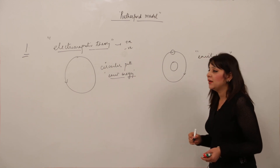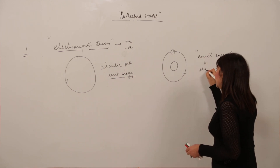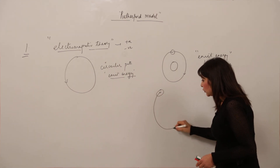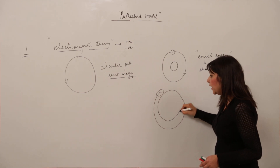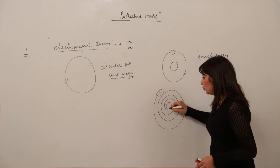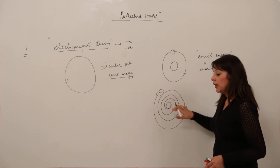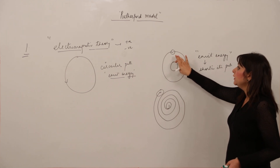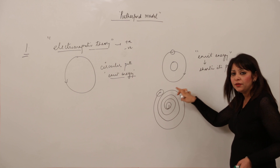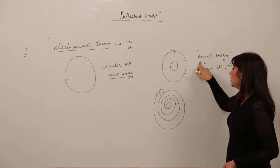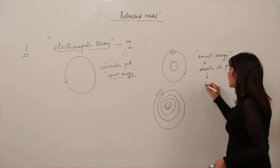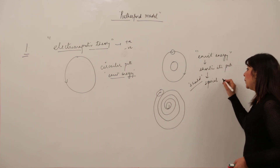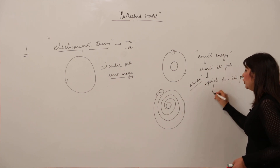If the electron emits energy, it should shorten its path. The negatively charged particle is moving and losing energy, so its path should become shorter and spiral, causing it to spiral down into the nucleus as it continuously emits energy. According to this theory, applying it here, any charged particle revolving in a circular path — including this negatively charged particle — should spiral down its path and finally fall into the nucleus.